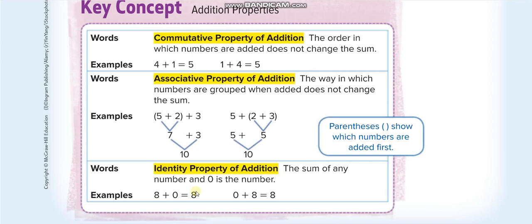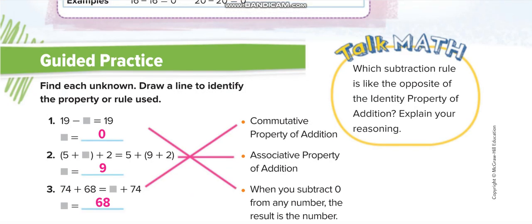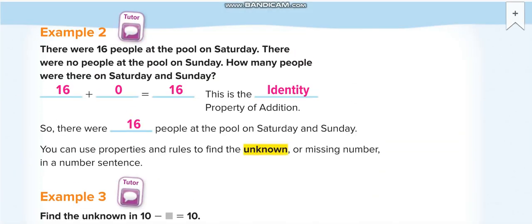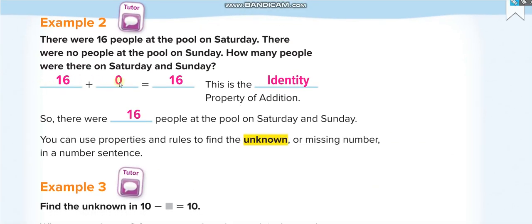The third property: identity property of addition. Any number plus zero equals the same number. For example, 16 plus 0 equals 16. That is the identity property of addition, and the answer is 16.